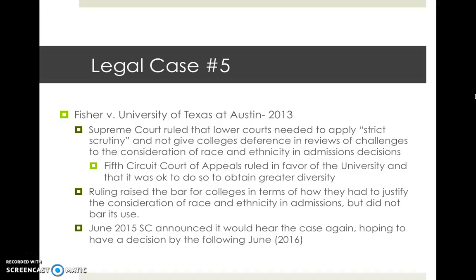Fisher was not in the top 10% of her class, so she competed for admission with other non-top-10% in-state applicants. The University of Texas denied Fisher's application, and she filed suit claiming the university's use of race as a consideration in admissions decisions violated the Equal Protection Clause of the 14th Amendment. The university argued that its use of race was a narrowly tailored means of pursuing greater diversity. The District Court decided in favor of the University of Texas, and the Fifth Circuit affirmed. Fisher appealed, and the case went to the Supreme Court. The first Supreme Court review in 2013 ruled that lower courts needed to apply strict scrutiny and not give colleges deference in challenges to race-based admissions. The Fifth Circuit then came back and again ruled in favor of the university, finding it acceptable to consider race to obtain greater diversity.